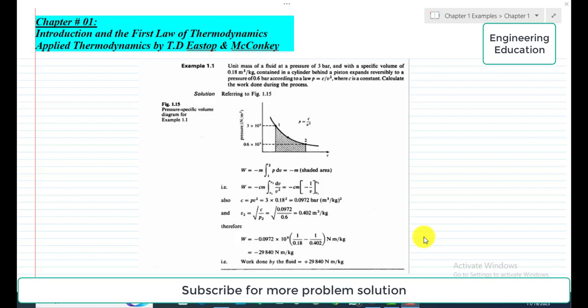So first of all, the data which is given in this statement: mass is unit mass, means one kilogram. Pressure P1 is basically 3 bar, the initial pressure before expansion. Converting it to Pascal, it will become 3 × 10⁵ Pascal. And the specific volume at this position is V1, equal to 0.18 cubic meter per kilogram.